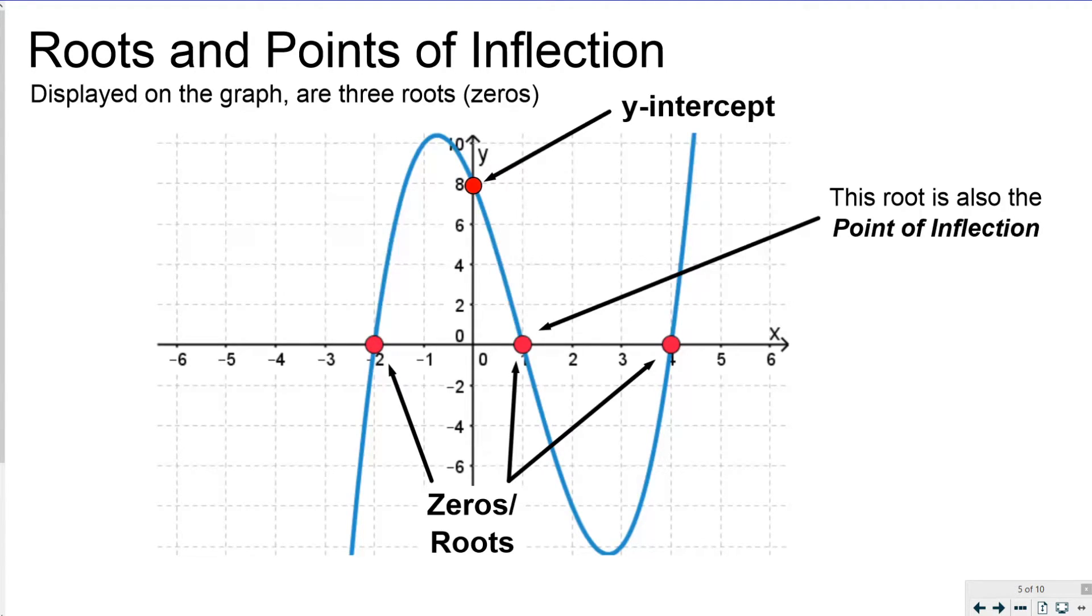I have my y-intercept up here. It happens that this point here, this root is also the point of inflection. Basically, the graph goes all the way up, comes all the way down, hits that point. And then it's a mirror of itself here to here, like it is a true mirror.